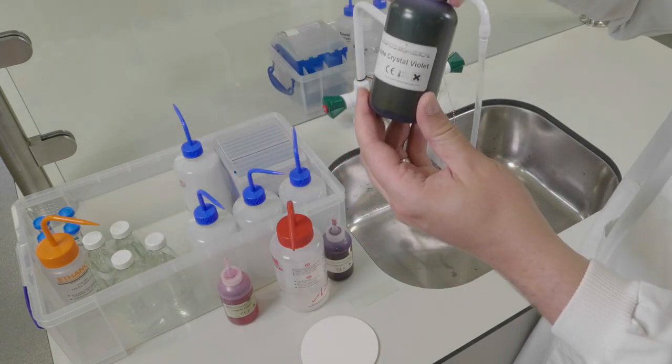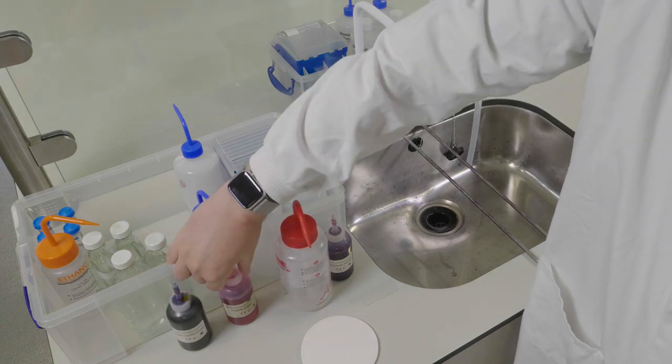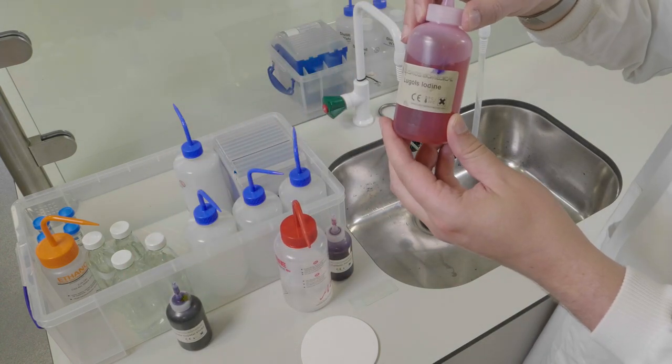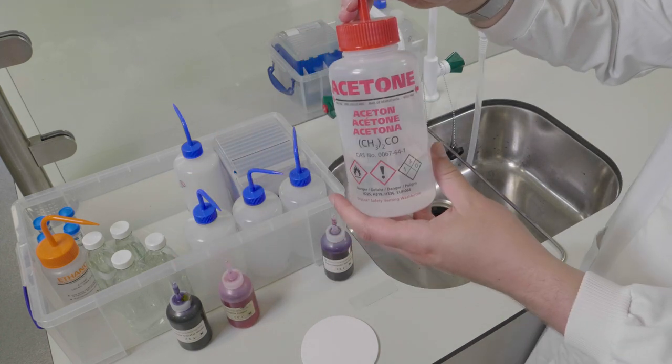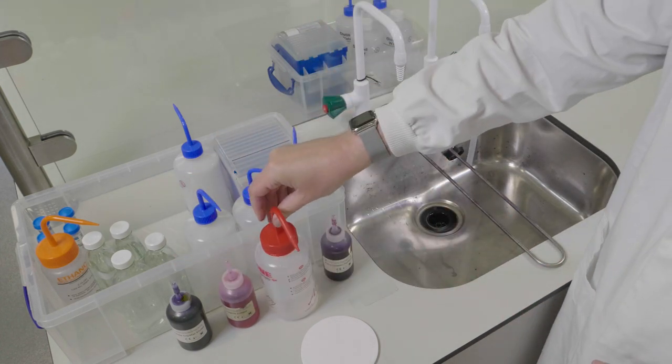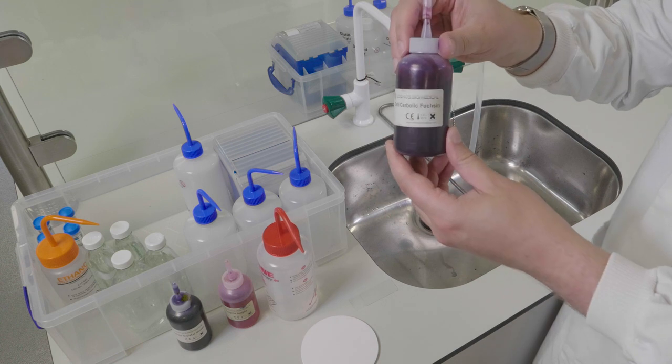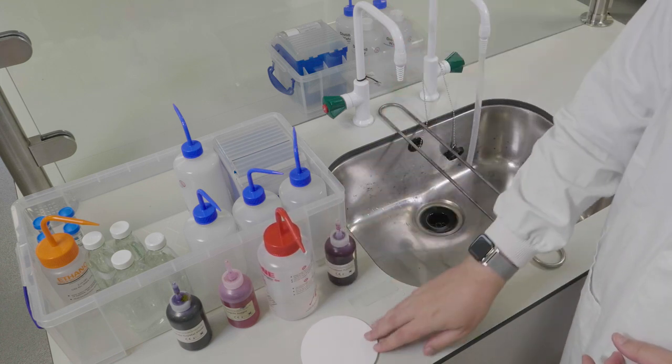From the box by the sink, take out the crystal violet, Lugol's iodine, acetone and some carbol fuchsin. You also need to collect some blotting paper.